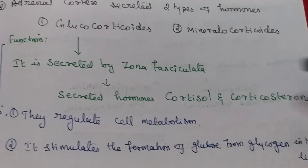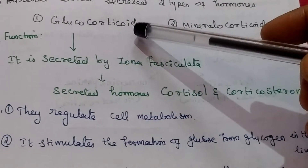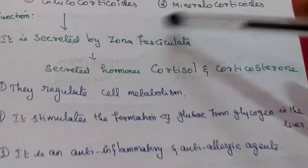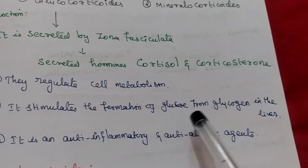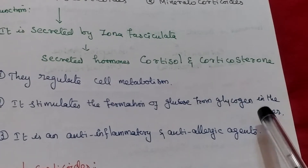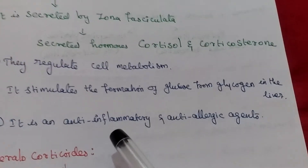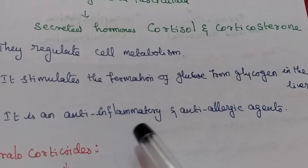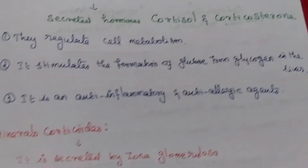What are the functions of glucocorticoids? They regulate body metabolism. They stimulate the formation of glucose from glycogen in the liver. They also act as anti-inflammatory and anti-allergic agents.